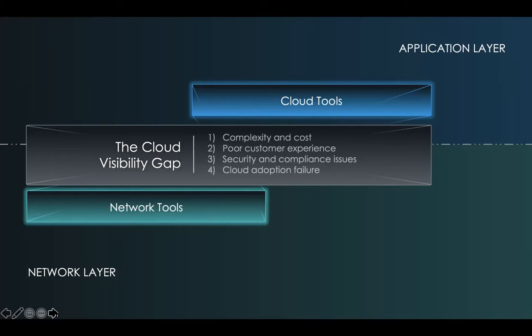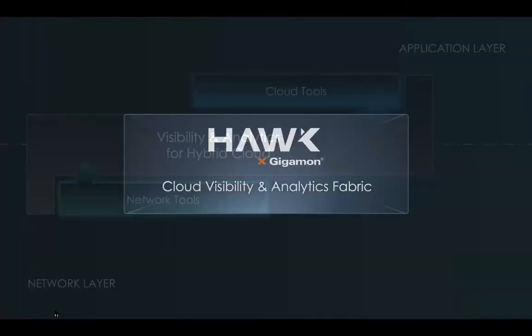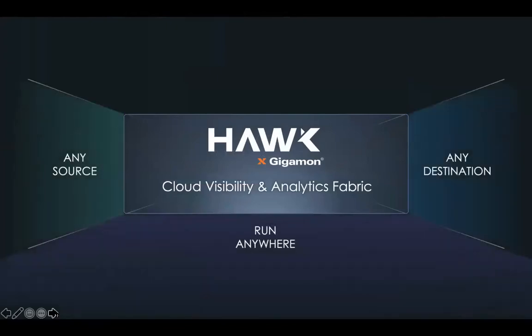So these are the issues we see with a hybrid visibility gap, and these are the issues that we are trying to solve with a tool that we call Hawk — Hawk by Gigamon.